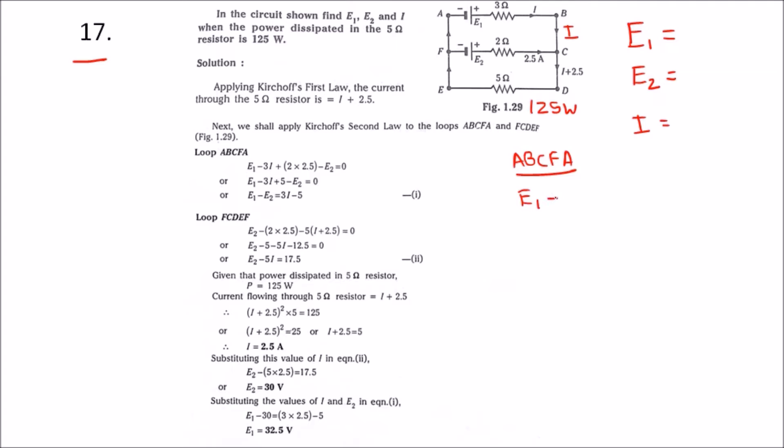E1 minus 3i is equal to E2 minus 2 into 2.5.